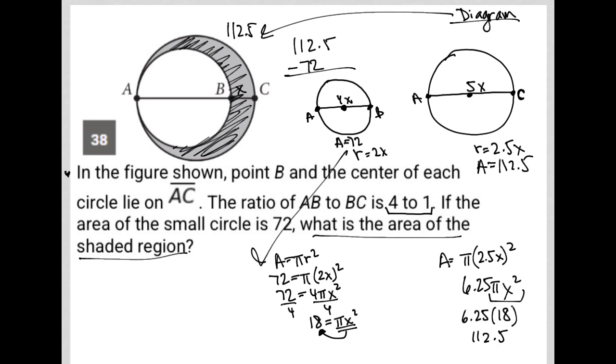Then what's left is the area of the shaded region. And that would be 40.5. So my answer here, if I did everything correct here, will be 40.5. So that's what I believe the correct answer is.